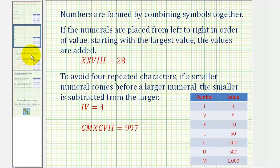For a quick review, numbers are formed by combining the symbols together. If the numerals are placed from left to right in order of values, starting with the largest value, followed by the smaller values, the values are added.